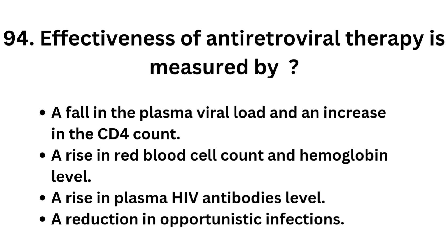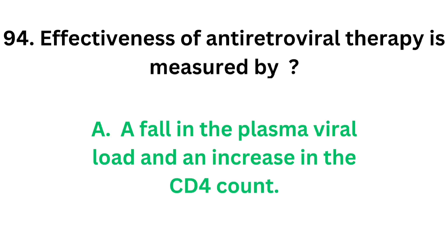Question number 94. The effectiveness of antiretroviral therapy is measured by: Option A: A fall in the plasma viral load and an increase in the CD4 count, Option B: A rise in the red blood cell count and hemoglobin level, Option C: A rise in plasma HIV antibodies level, Option D: A reduction in opportunistic infections. The correct answer is Option A — a fall in the plasma viral load and an increase in the CD4 count.